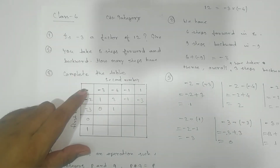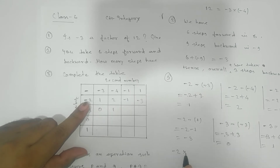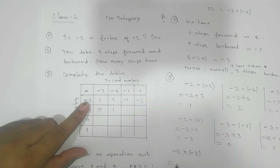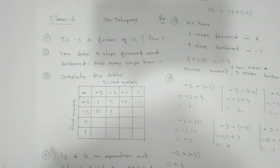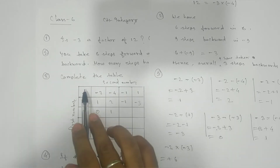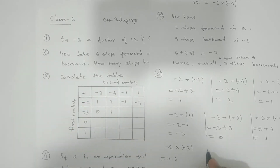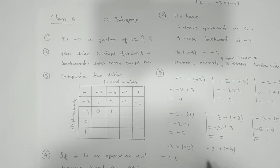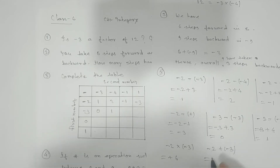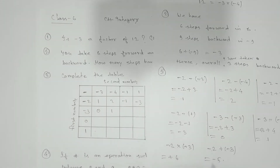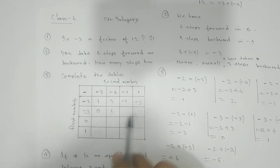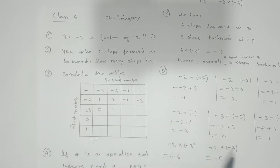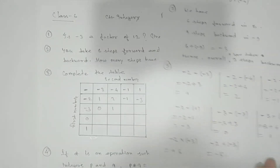Now, if instead of minus the operation were multiplication, you'd write: minus 2 into minus 3 — double minus gives plus — so 2 times 3 is 6. If it were a plus symbol instead, minus 2 plus minus 3 gives minus 5. See the difference — whatever operation is given, proceed accordingly. I hope you can solve the rest of the boxes using this concept.